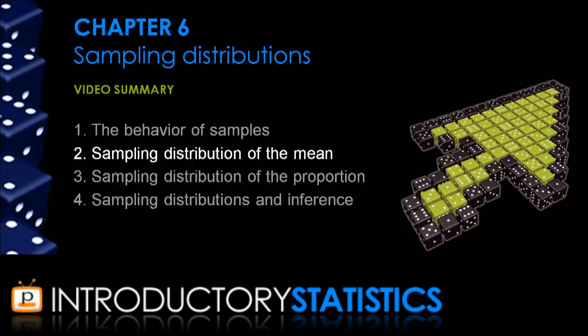The sampling distribution of the mean is the main sampling distribution we look at for numerical variables. If we have a categorical variable, we look at the sampling distribution of the proportion.